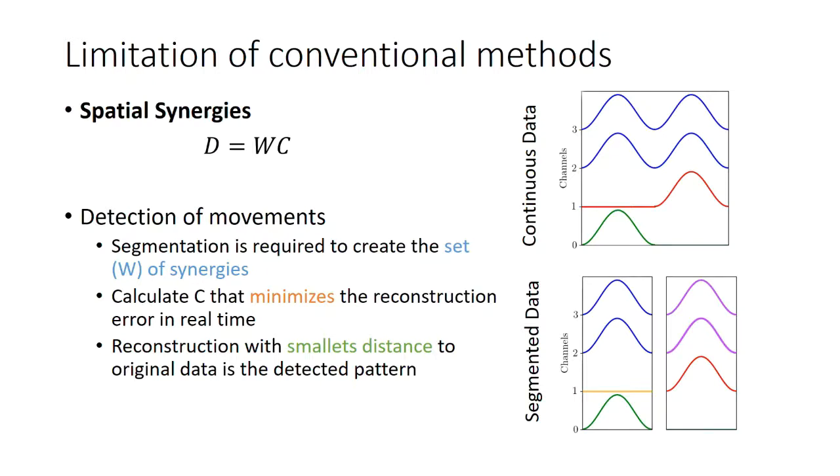Since we want specific patterns for one movement, we need to first segment the data to find a set of synergies for that specific movement. And after this, we need to calculate the matrix C in real time that minimizes the reconstruction error. With the reconstructed data for all sets of synergies, we detect the pattern as the reconstruction with smallest distance to the original data.